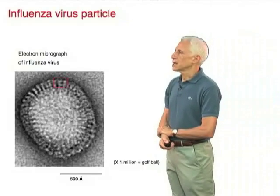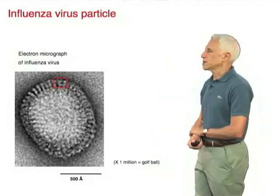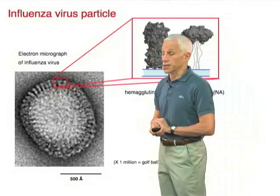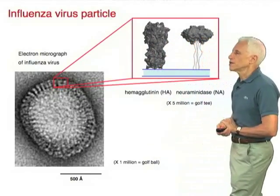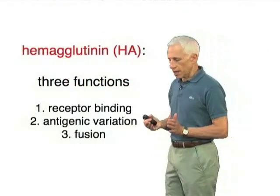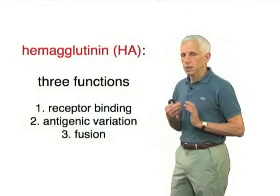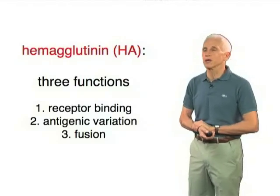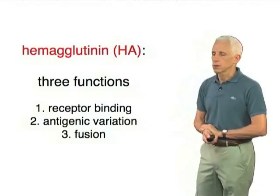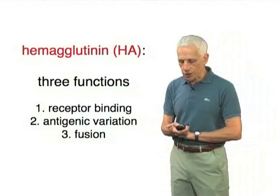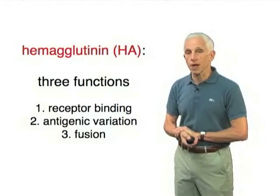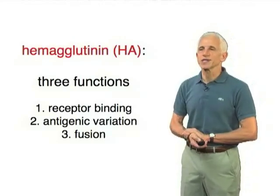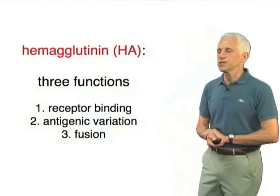In the case of influenza, the protein hemagglutinin sticks off the surface of the virus along with another protein, which is an enzyme called neuraminidase — we won't talk about that today. The hemagglutinin is a trimeric structure with three functions: it binds the virus to its receptor, which is sialic acid on glycolipids or glycoproteins on the surface of the target cell. It has structures on the outside that can vary without compromising its two other essential functions, so that the virus can evolve to escape neutralization by the immune system of its hosts.